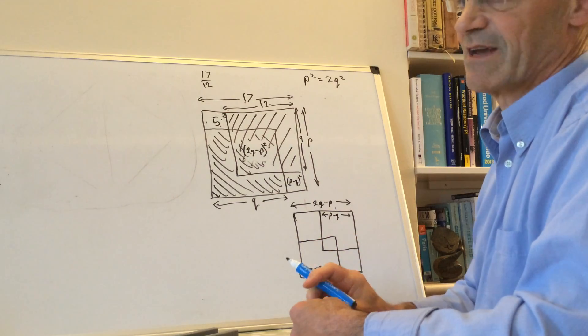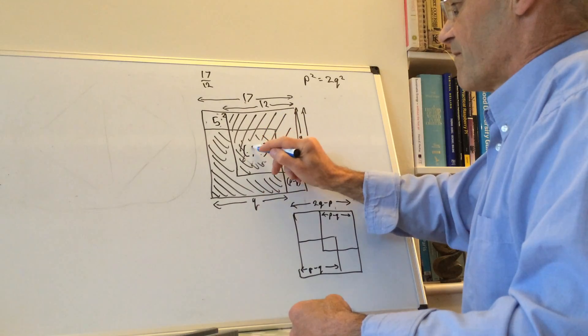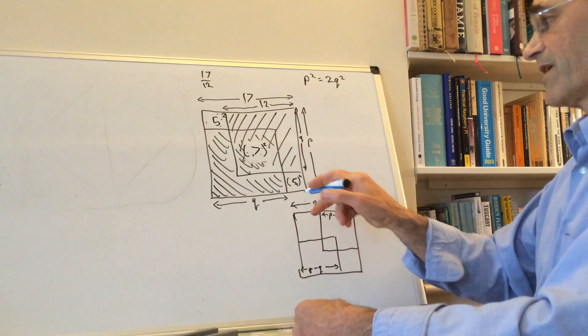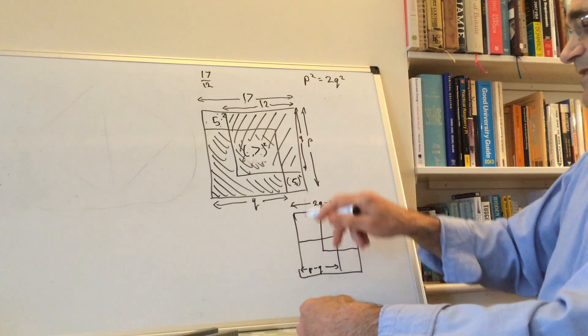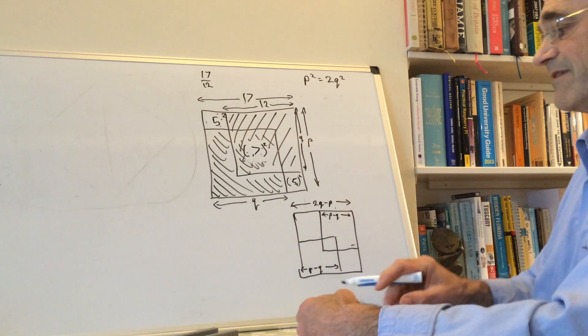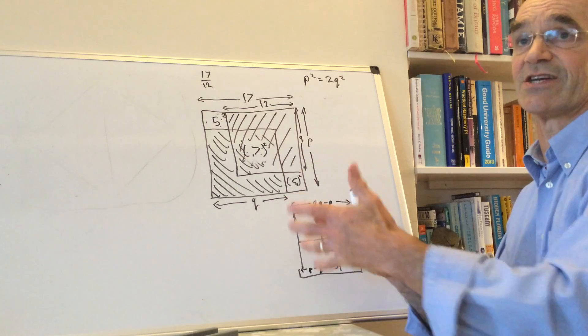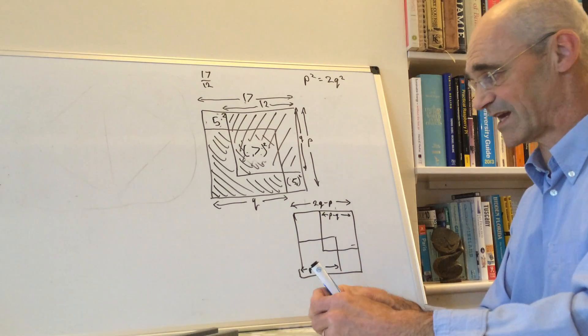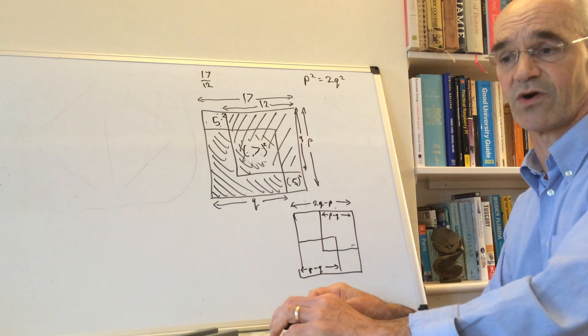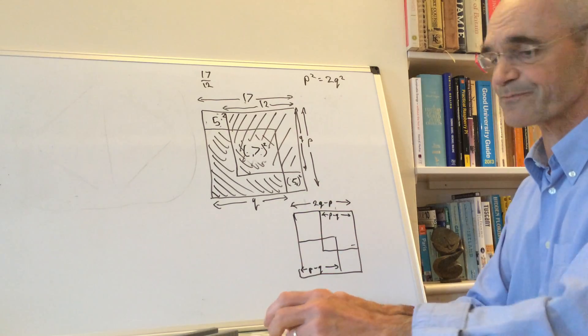And this is going to then be 17 minus 12, which is 5², and this one will be 2q minus p, so that's 24 minus 17, which is 7. And this will be 5 again. So you'd end up with a similar pair which would be 7 by 5 here, and then you could reduce that down again. And eventually you'll end up forced into the situation where you've got something that clearly doesn't work because the sides measure less than 1 or they're just all the same size.